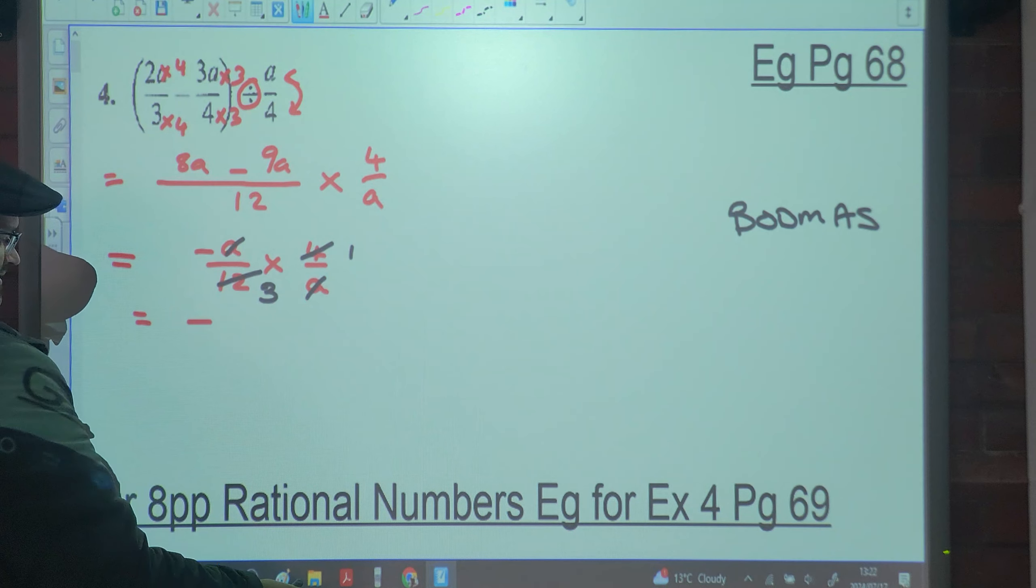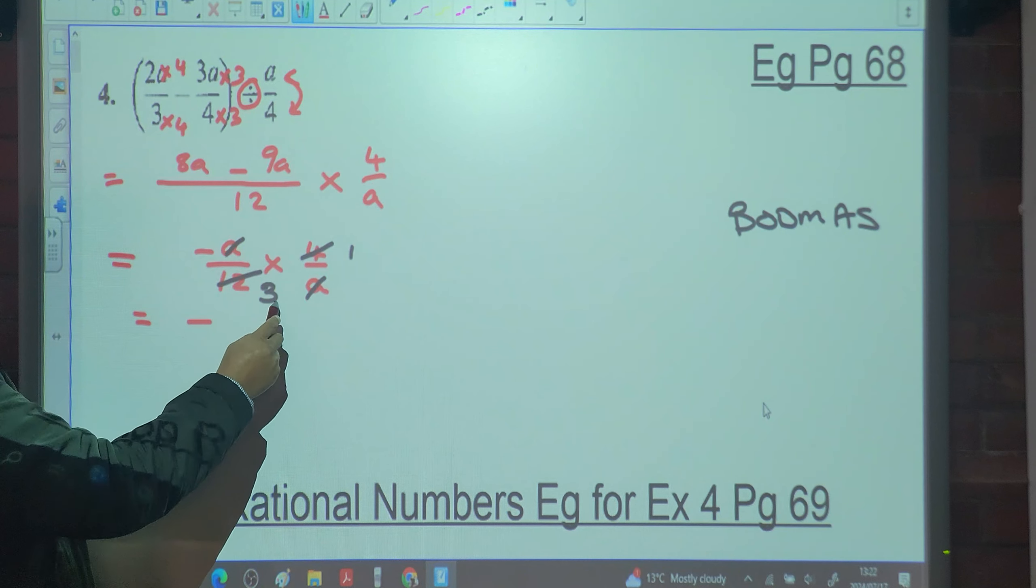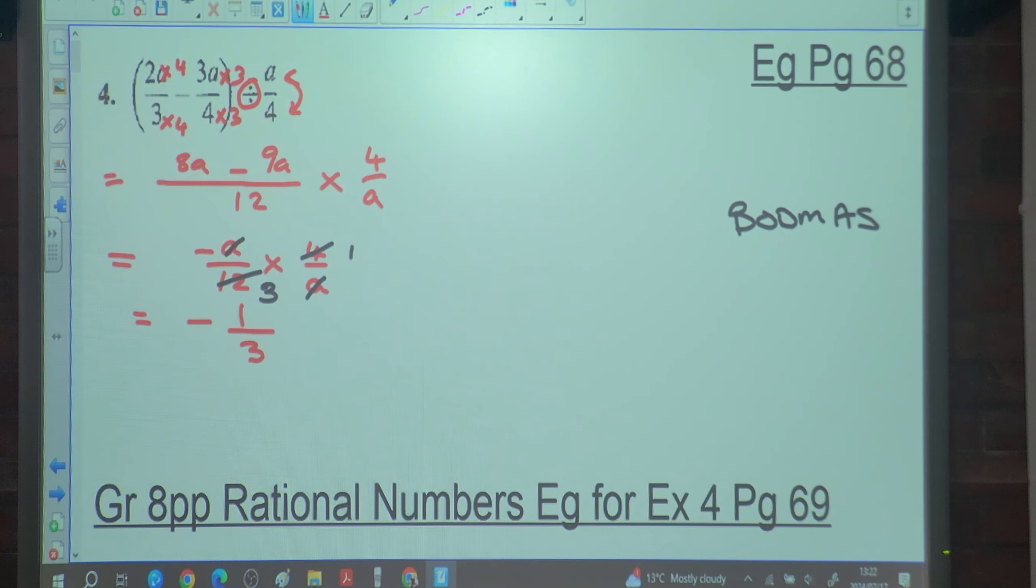So what do you notice? The A's, the threes in the denominator. So it's going to be negative one over nine. Is there any confusion, people?